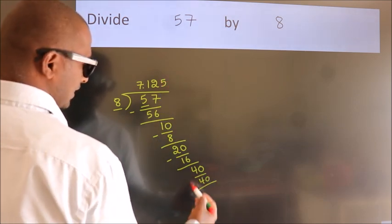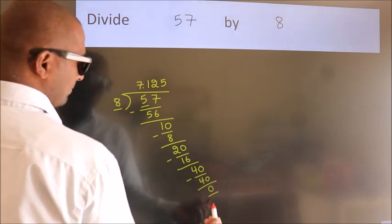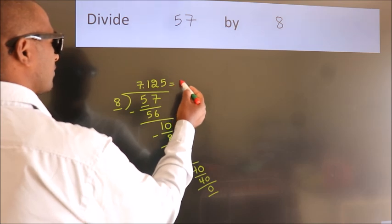Now we subtract. We get 0. Here, we got remainder 0. So this is our quotient.